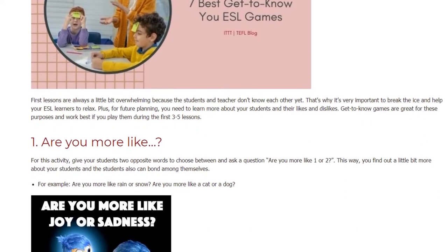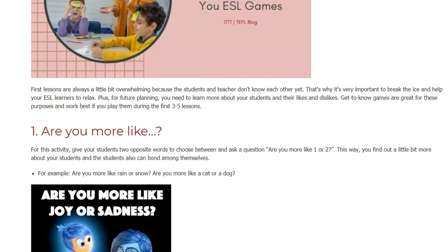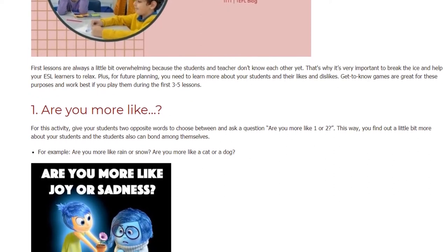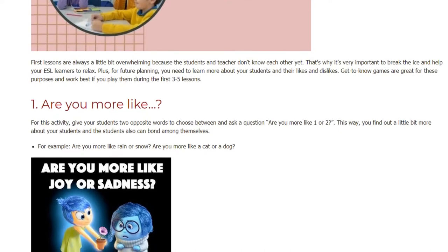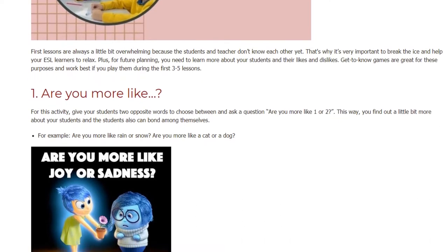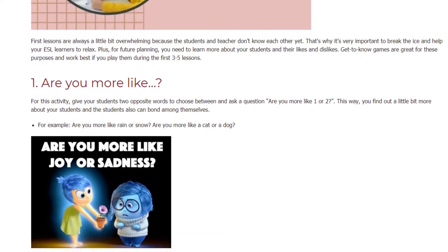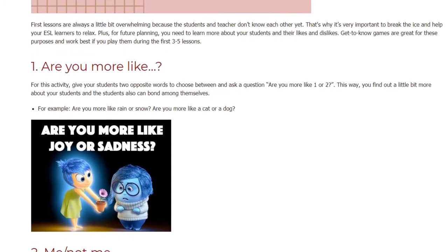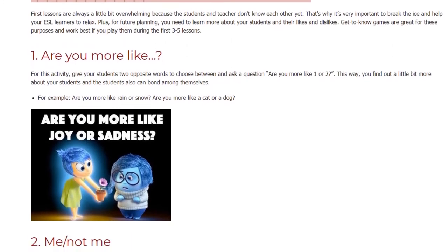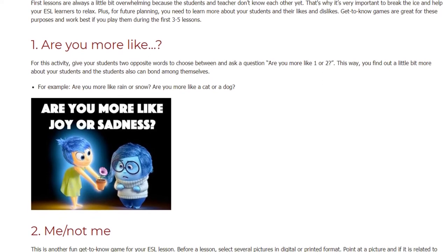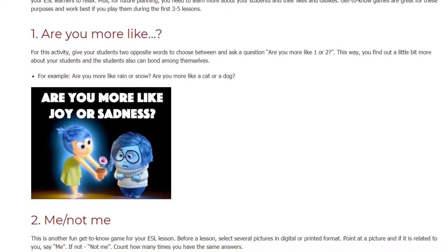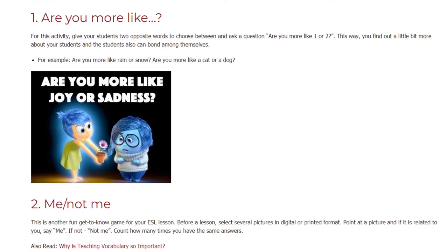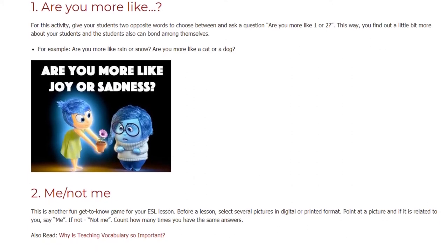Game 1: Are You More Like? For this activity, give your students two opposite words to choose between and ask the question: are you more like one or two? This way you find out a little bit more about your students, and the students can also bond among themselves. For example: are you more like rain or snow? Are you more like a cat or a dog?